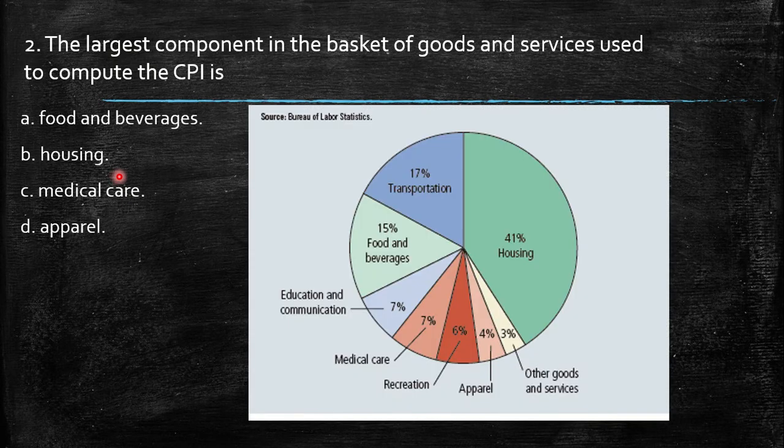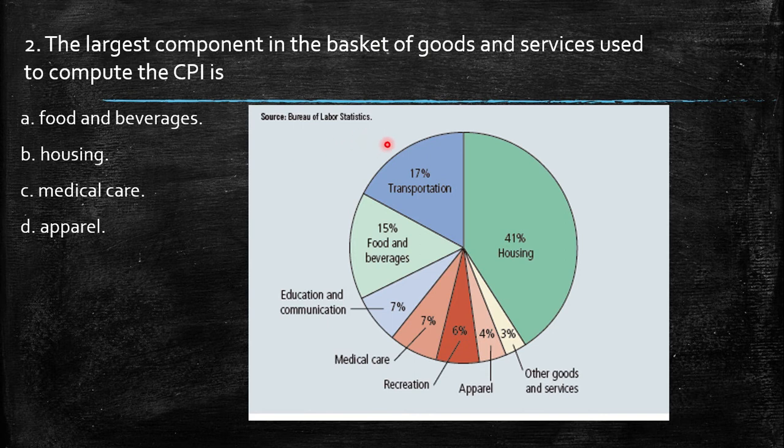So this is the pie which comes from the Bureau of Labor Statistics, where housing definitely is weighted with 41% as a proportion of the CPI basket. So it should be B, housing.